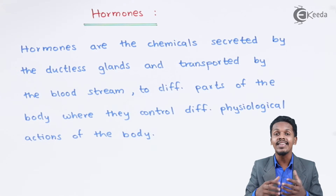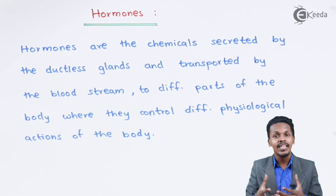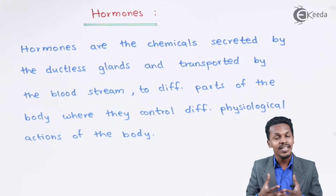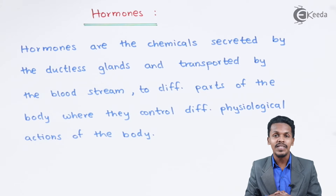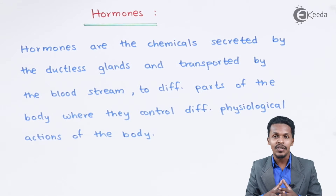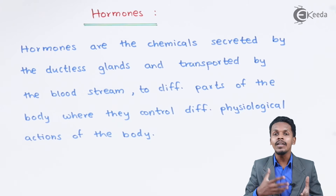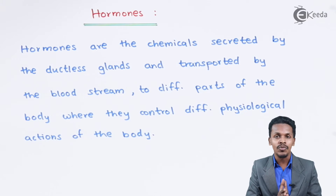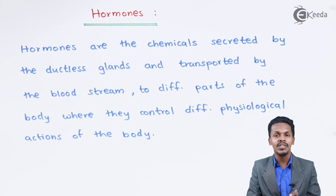For example, thyroxine is secreted through the neck, but it increases the consumption of oxygen throughout the body, and that is how it has wide application. So that is what we have discussed about thyroxine.